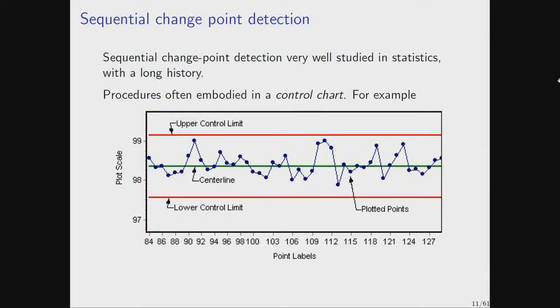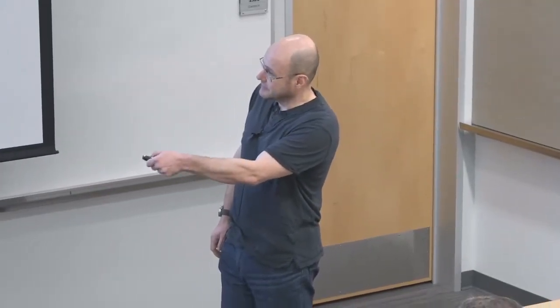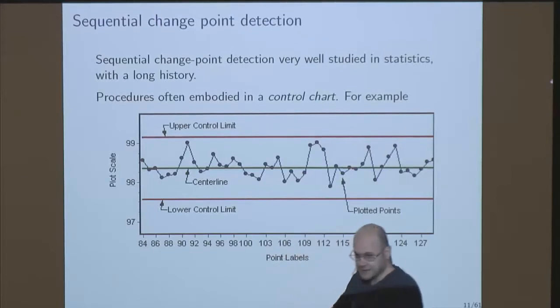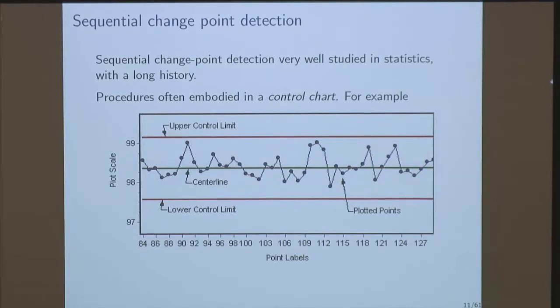Change point detection — you must be familiar with these sorts of control charts. You're monitoring the quantity of interest. You're able to define control limits. When the quantity of interest moves out of the control limits, you're able to define an out-of-control event, and we'd call that a change point. This goes back to Shewhart in the 1920s and 1930s. Very well studied, and what I'm going to talk about is how one might adapt this.